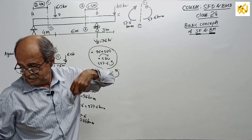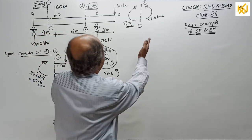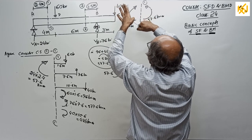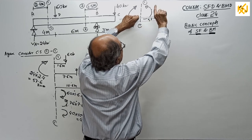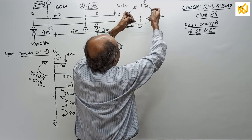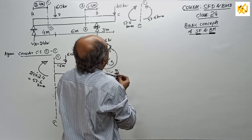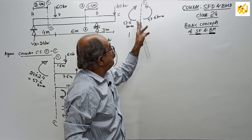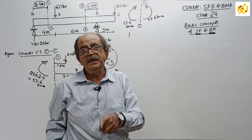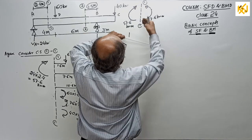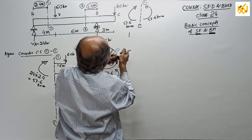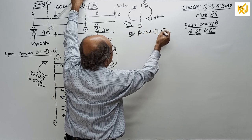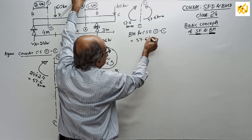This 57.6 kN·m clockwise from the left side will bend the beam in a sagging shape — concave upward. Together, the beam bends this way. The moment which creates this bending for the cross-section is called the bending moment. Therefore, bending moment for the cross-section at 1-1 = 57.6 kN·m.